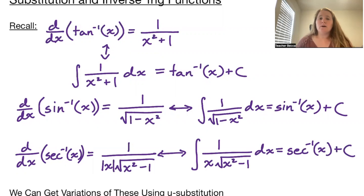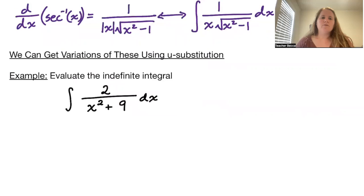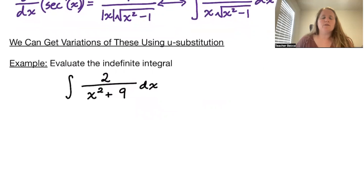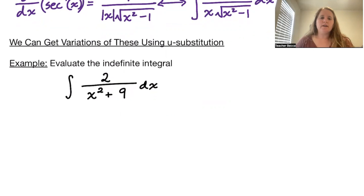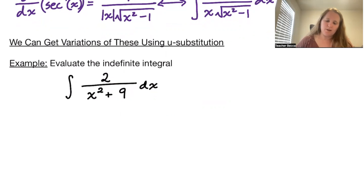Now that we have u-substitution, we can get some variations of these. For example, let's go ahead and evaluate the indefinite integral of 2/(x² + 9) dx. We have x² + 9, and we would like something of the form (something)² + 1 in our denominator.